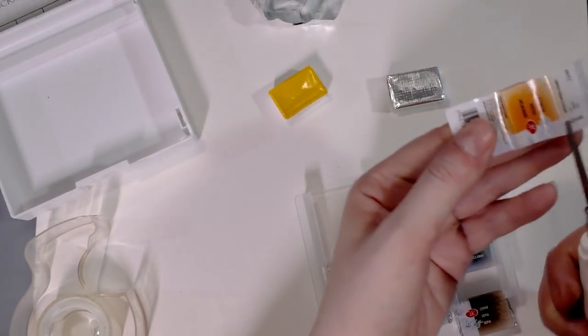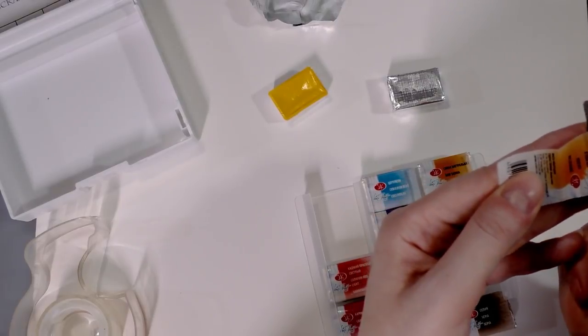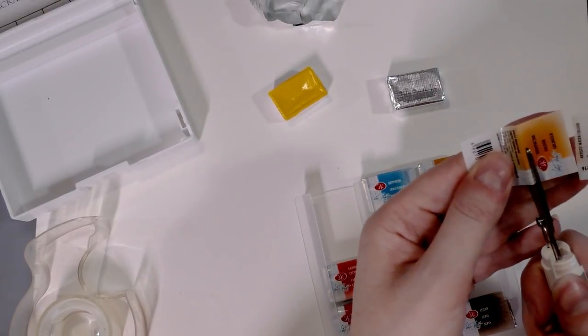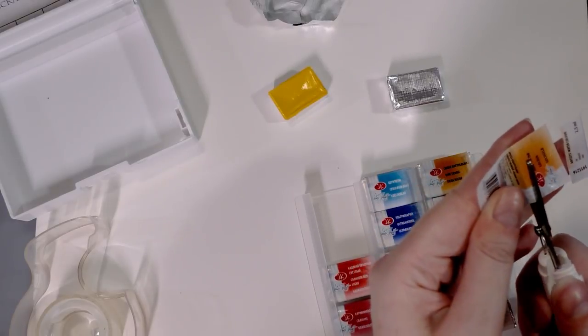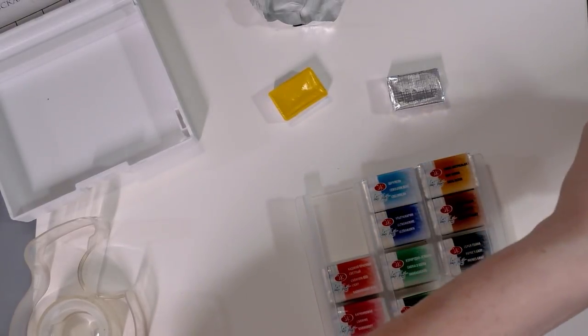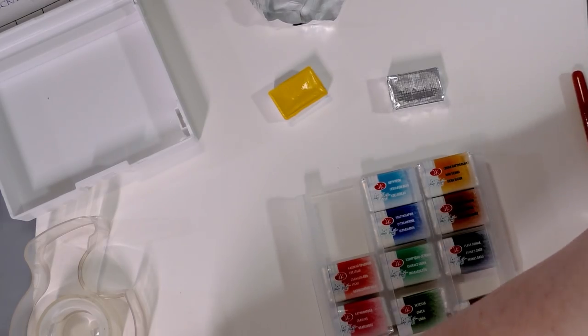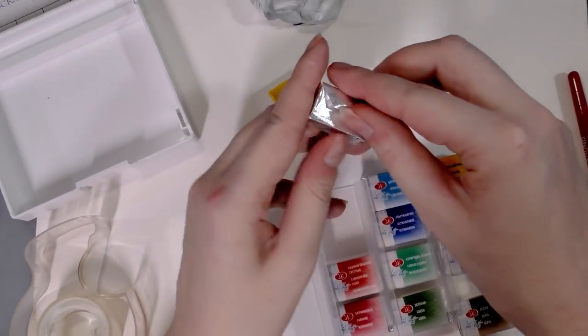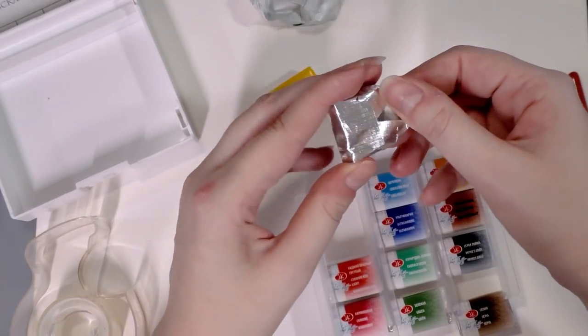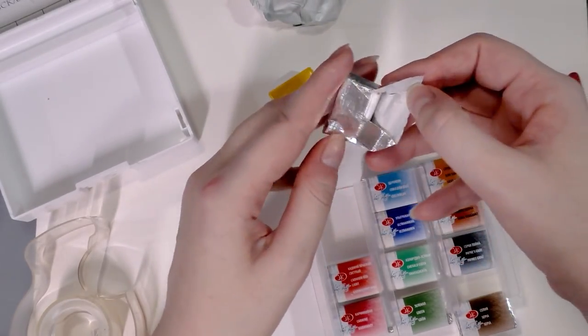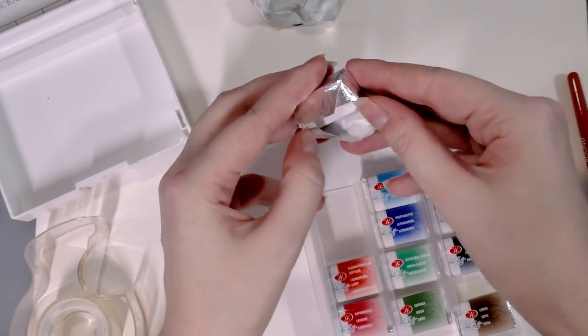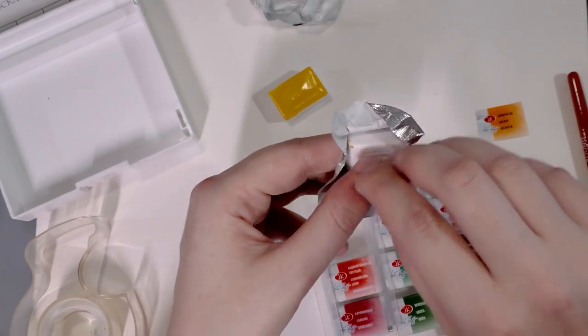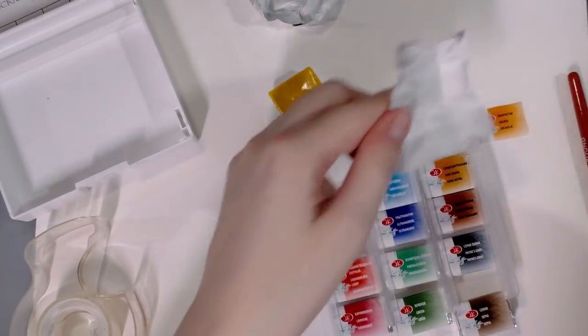So these are available in pans or in 10 milliliter tubes and 10 milliliter is a pretty generous amount. You can get the pans open stock from the St. Petersburg website. Again, check the description below for a link for that. And these come in plastic, cardboard, metal, and wooden sets. And we're looking at one of the plastic sets today. This is the plein air set. Again, these are not the same as the Yarka St. Petersburg watercolors.